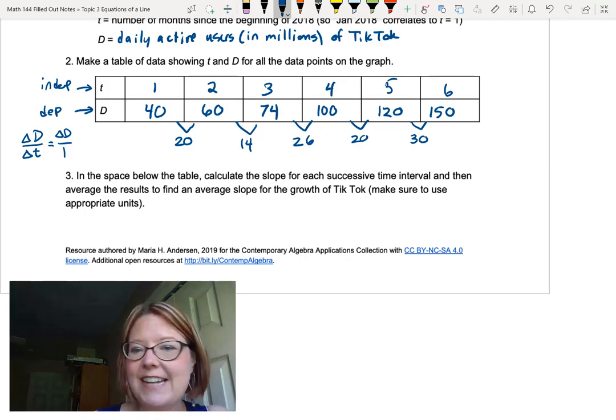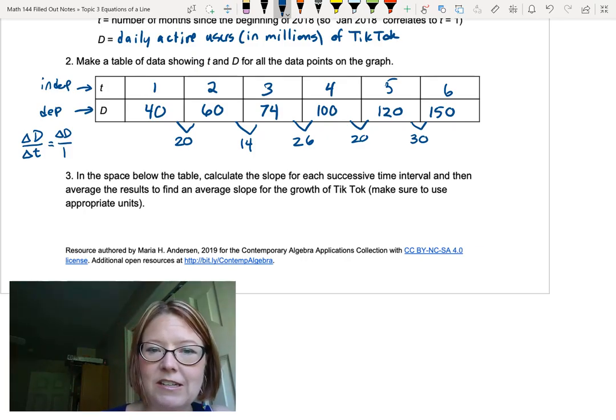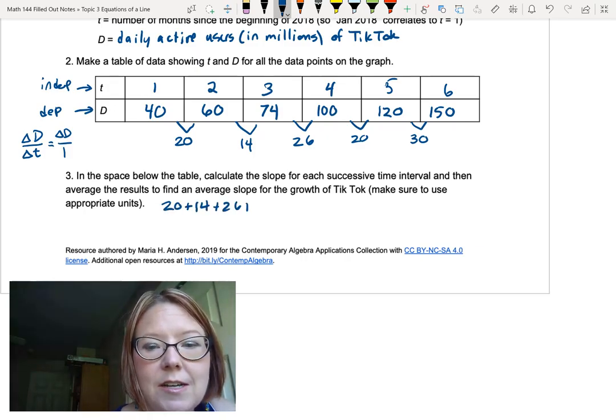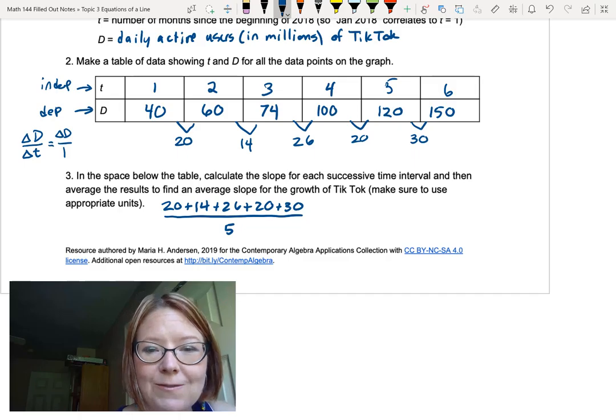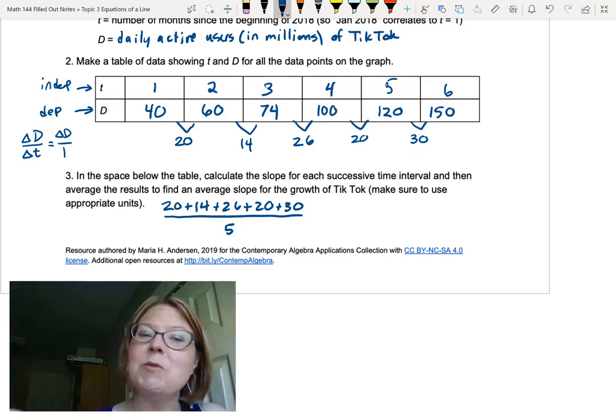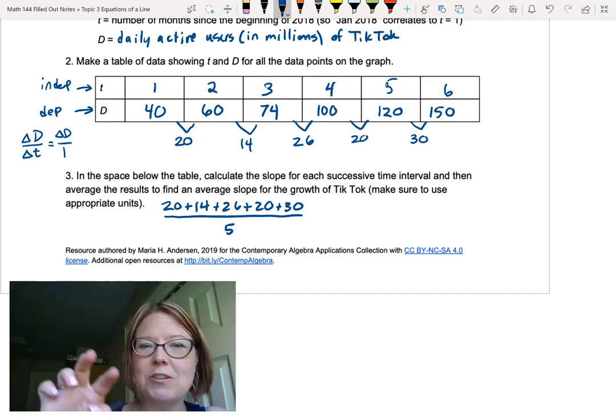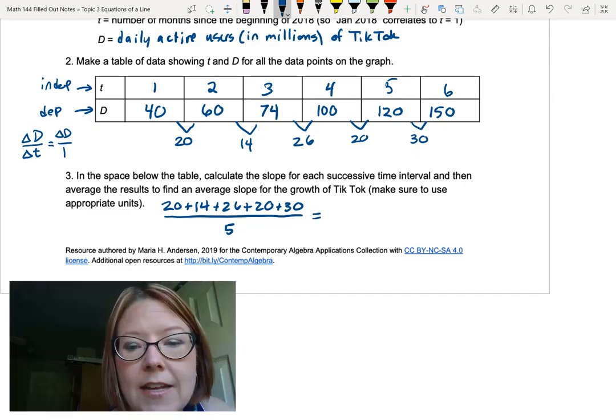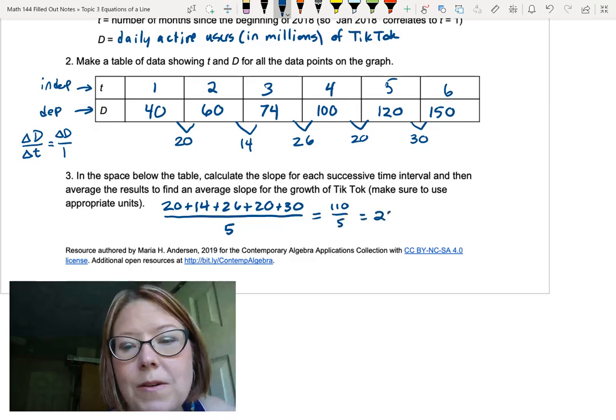Now let's find an average slope for that, to get an idea of the average slope for the growth of TikTok. So we add up all those values, 20 plus 14, plus 26, plus 20, plus 30. We divide by the number of values we have, which is five. We started with six points, but once we take the slopes between those points, we're just going to have five slopes. This gives us 110 over five, or a slope of 22.